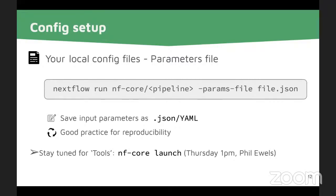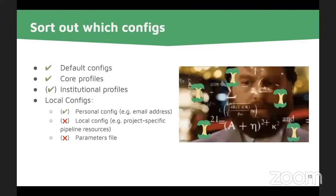There's also a helper tool called `nf-core launch`, and Phil will talk about this on Thursday in his tools talk. If you now have too many configs in your mind, don't worry. For most of them, you don't have to worry or only worry about them once. The default and core configs are already set up — you just use them. The institutional and personal configs you may need to set up once and then update only if something changes. The local config for project-specific resources you hopefully won't need, but may if your data is special. And the parameters file you always need to provide your input parameters.